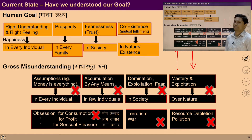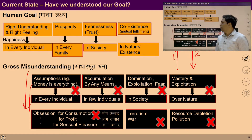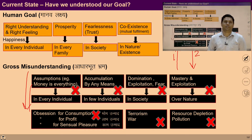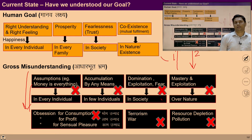Good morning students, welcome to all. In this lecture number 16 of module 2, that is steps for transition, in the previous lecture we tried to evaluate the present state of the society using a solution-centric approach. In this lecture we are going to discuss the appropriate steps required for the transition from the current state of the society to the desirable state of the society.